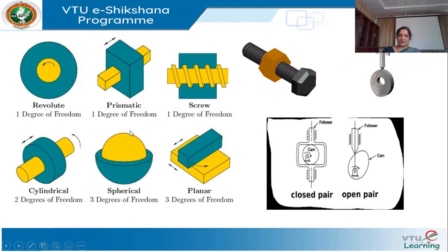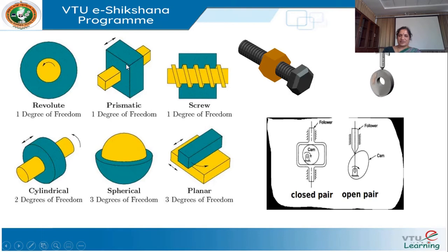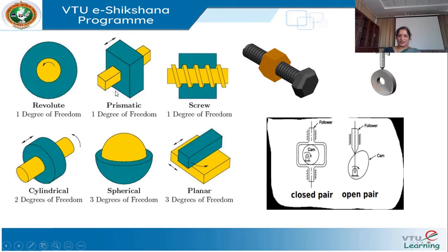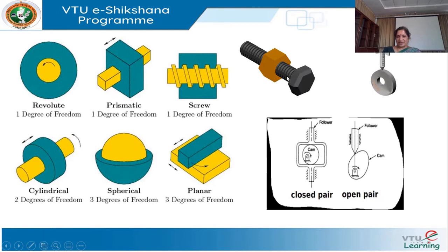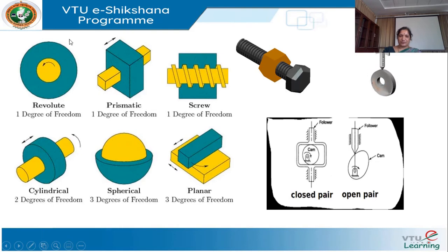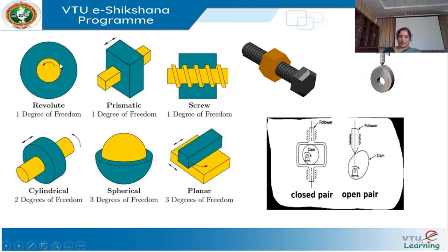In the sliding pair, there is sliding motion between the two links — for example, a rectangular rod moving inside a rectangular hole. In a turning pair, for example, there is a shaft inside a hole, turning inside it. In a rolling pair, we consider the ball bearing as an example — there is surface contact between the two links.